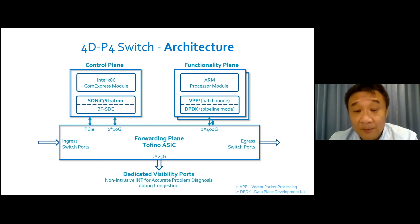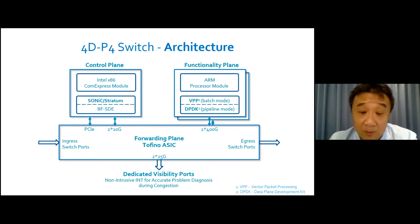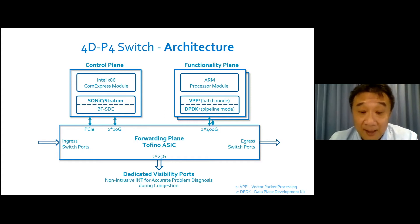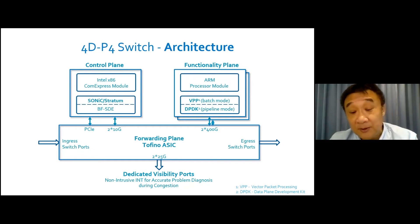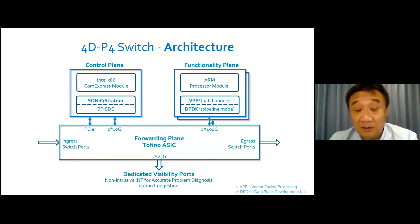The Tofino ASIC also provides 25-gig connections to the dedicated visibility ports. With dedicated visibility ports, INT traffic will not be allowed to intrude into the production network traffic, which is crucial to the accurate diagnosis of potential networking problems — especially during network congestion, when we need to collect as much telemetry information as possible while not worsening the congestion at the same time.